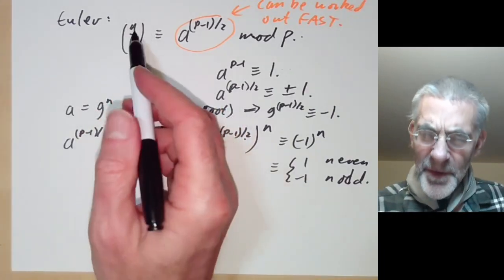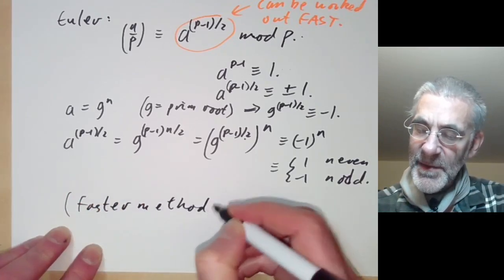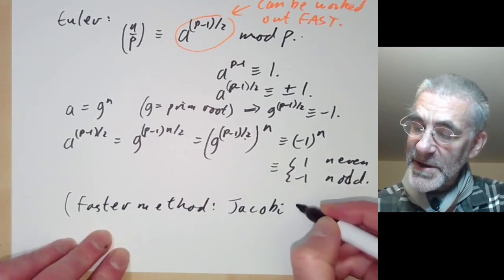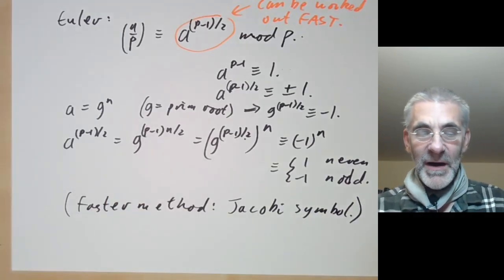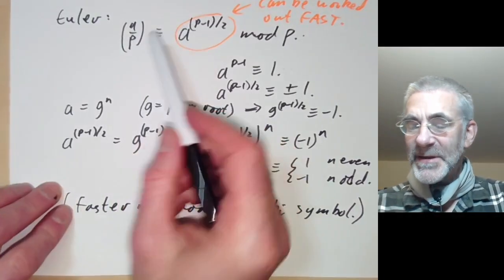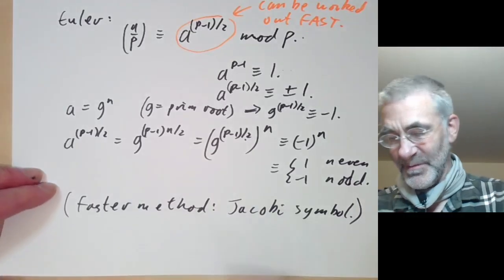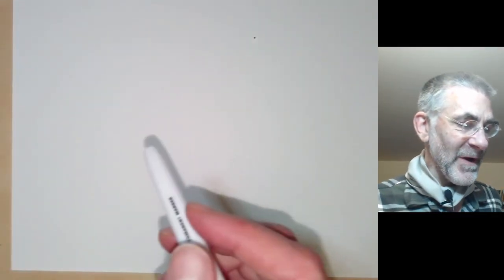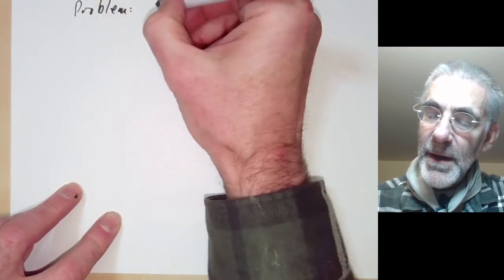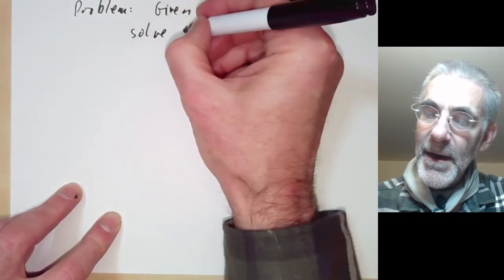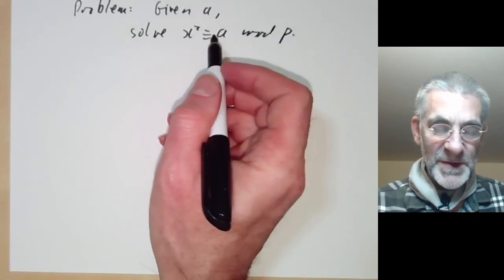In fact, this is not the best way to check whether a is a square. There's a faster method using something called the Jacobi symbol and the law of quadratic reciprocity, which is a really fundamental result we'll be covering over the next few lectures. So that solves the first problem. Now we have the next problem: given a, solve x squared congruent to a modulo p, again assuming p is far too large to do this by case-by-case checking.